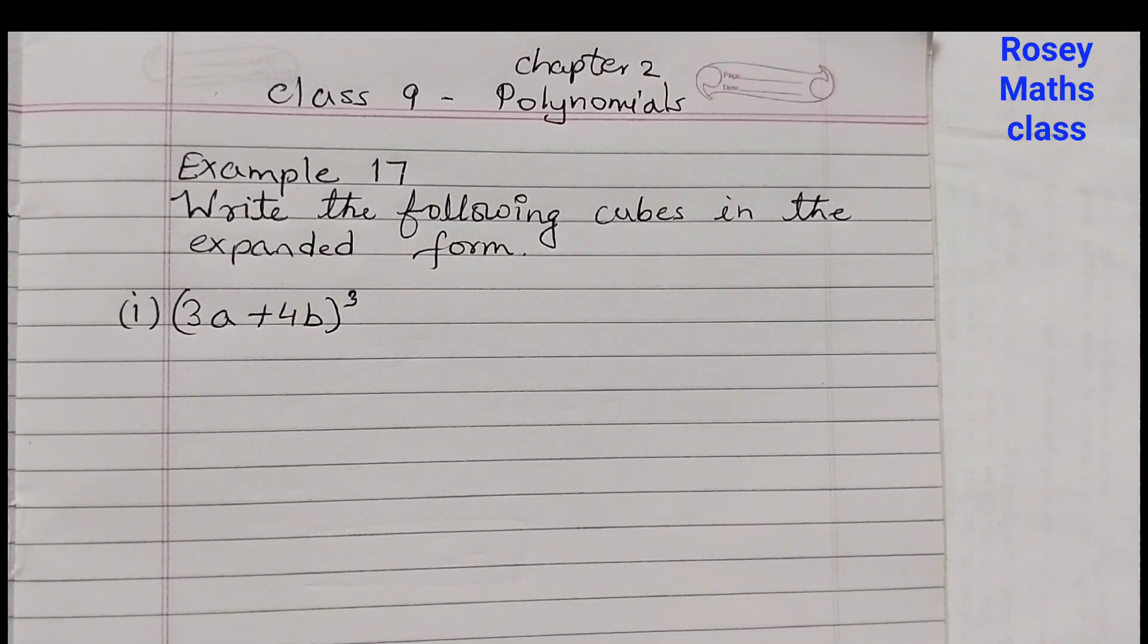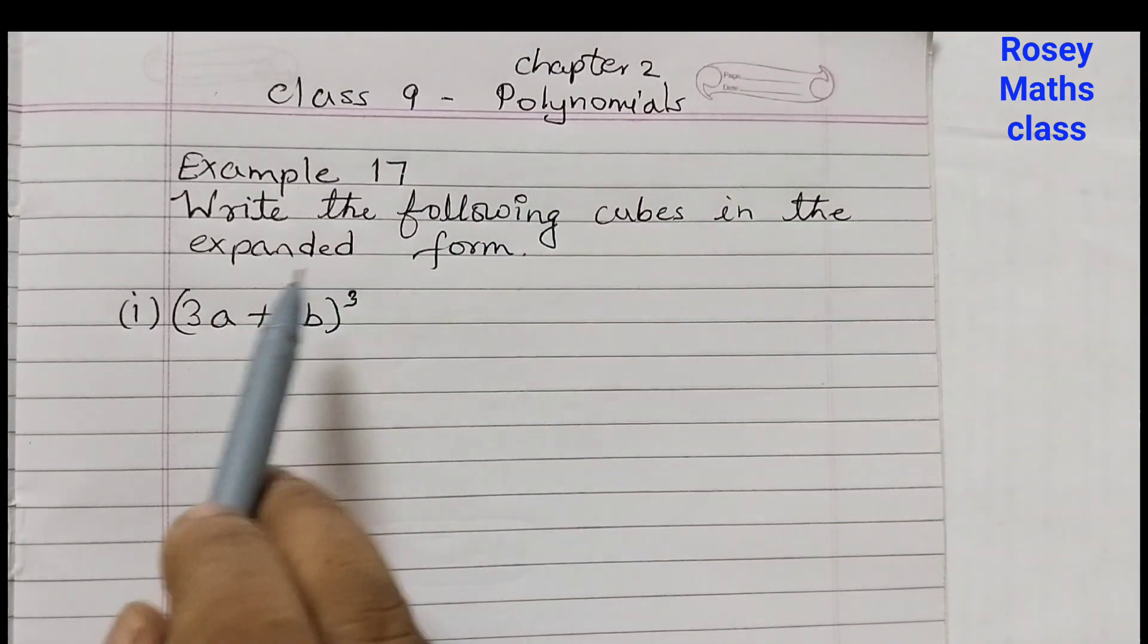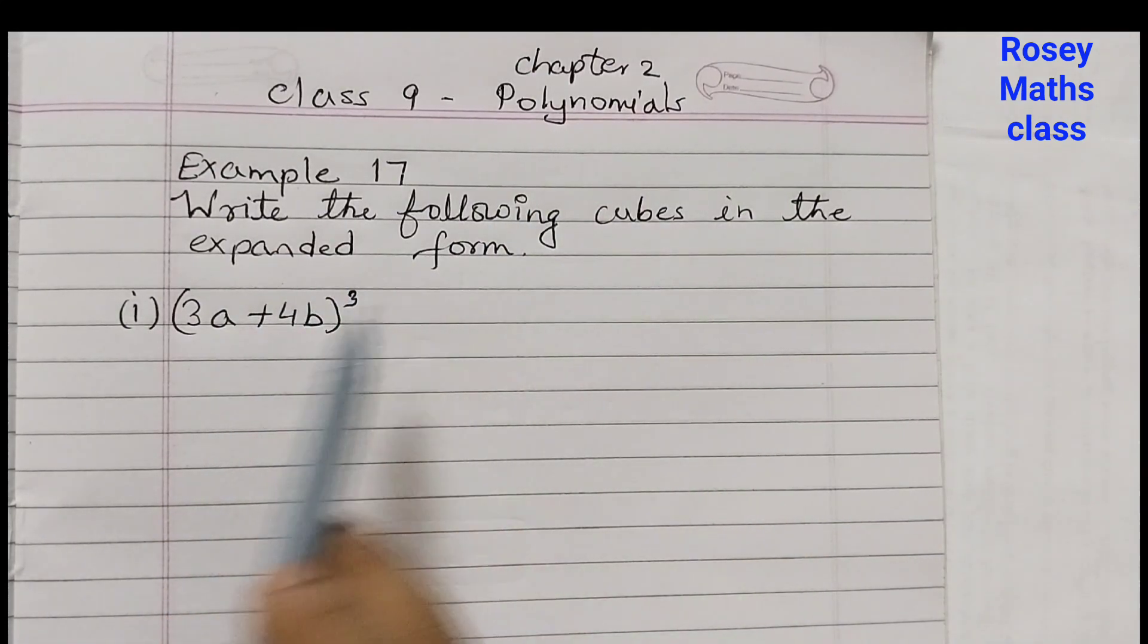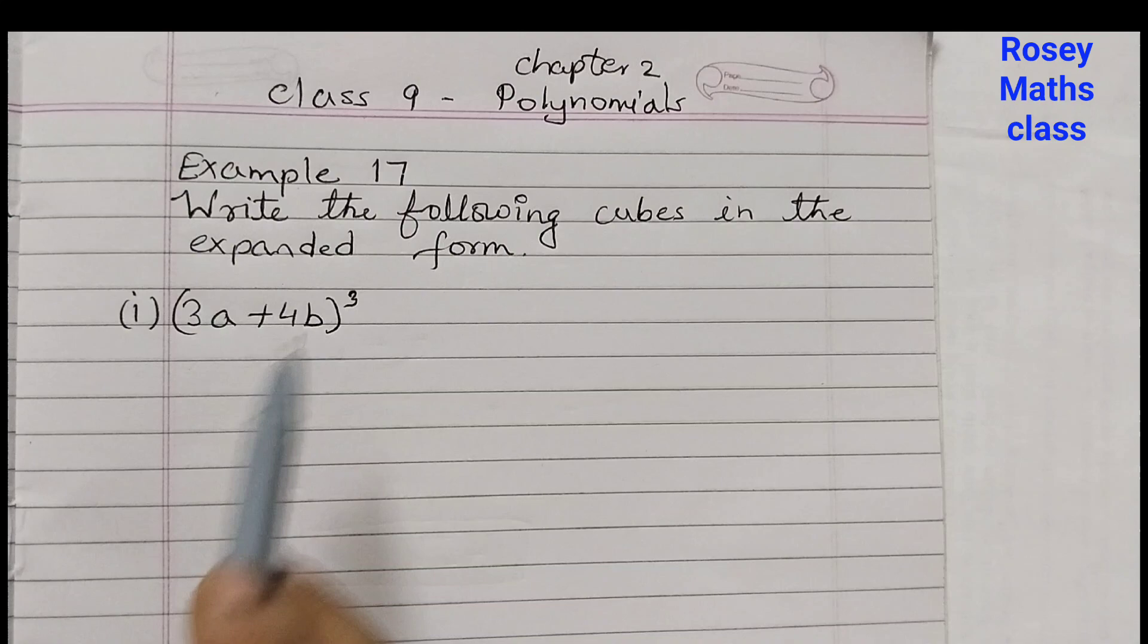Hello students, in today's video we shall discuss example number 17 of chapter 2 polynomials. Write the following cubes in the expanded form: (3a + 4b)³. This we need to write in expanded form.